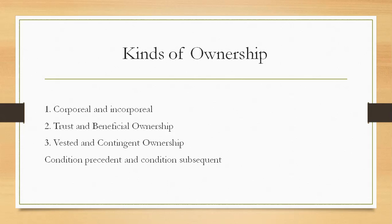Incorporeal ownership is the ownership of a right. Examples of incorporeal property are copyright, patent, trademarks, goodwill, etc. It happens that the value of incorporeal property could be far higher than that of corporeal property. For example, the goodwill of a business could be much higher than that of the actual property involved.